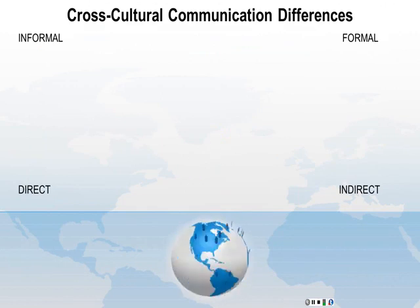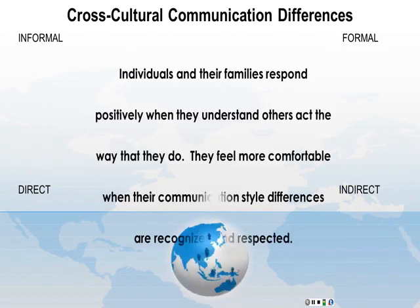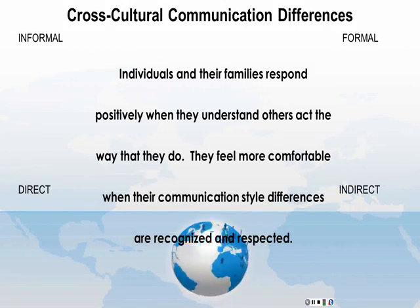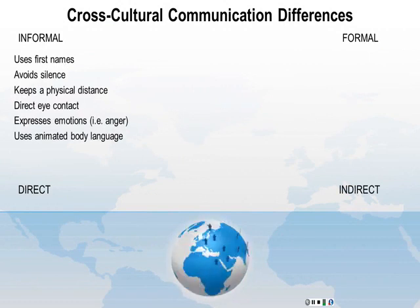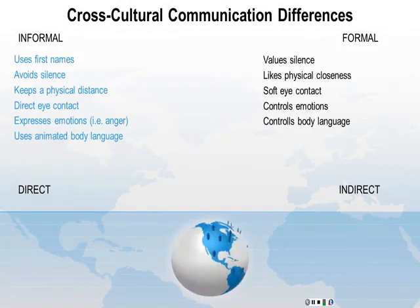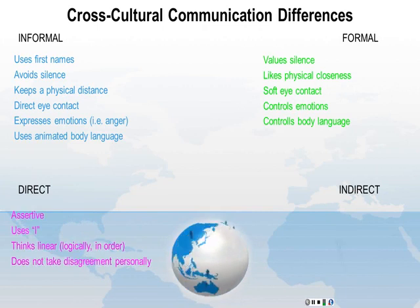Cross-cultural communication differences. People communicate either informally or formally, and either directly or indirectly. Individuals and their families respond positively when they understand why others act the way that they do. They feel more comfortable when their communication style differences are recognized and respected. Informal and formal are just about opposites, as are direct and indirect.